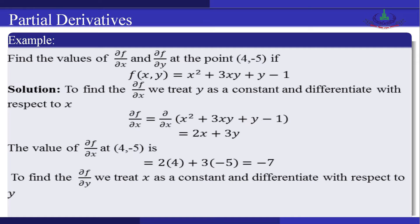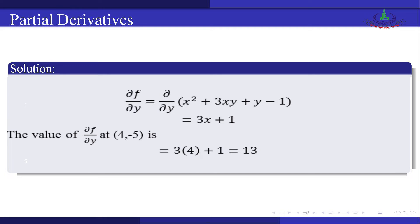To find ∂f/∂y, we treat x as a constant and differentiate the given function with respect to y. We get ∂f/∂y = ∂/∂y (x² + 3xy + y − 1) = 3x + 1. So the value of ∂f/∂y at (4, −5) is 3(4) + 1 = 13.